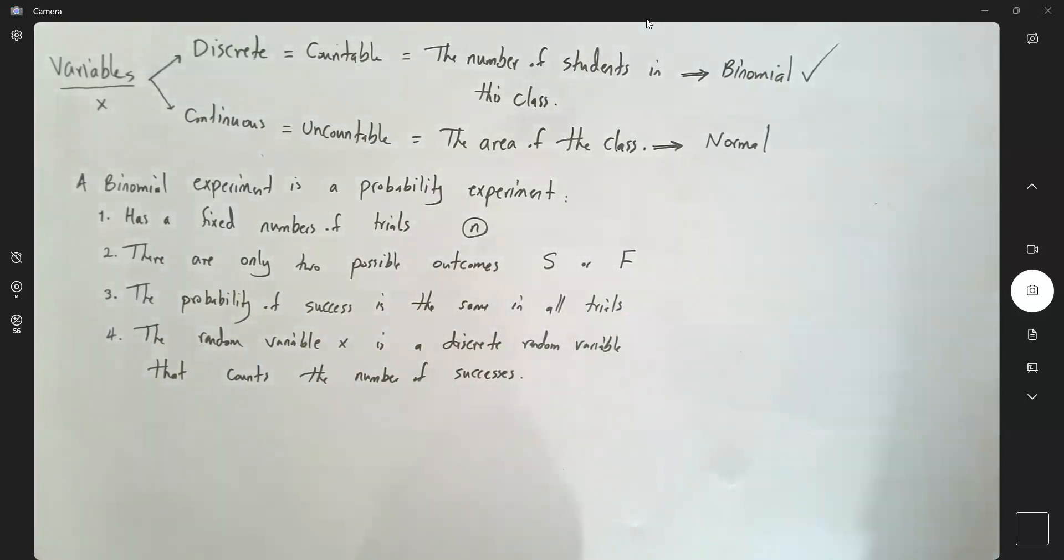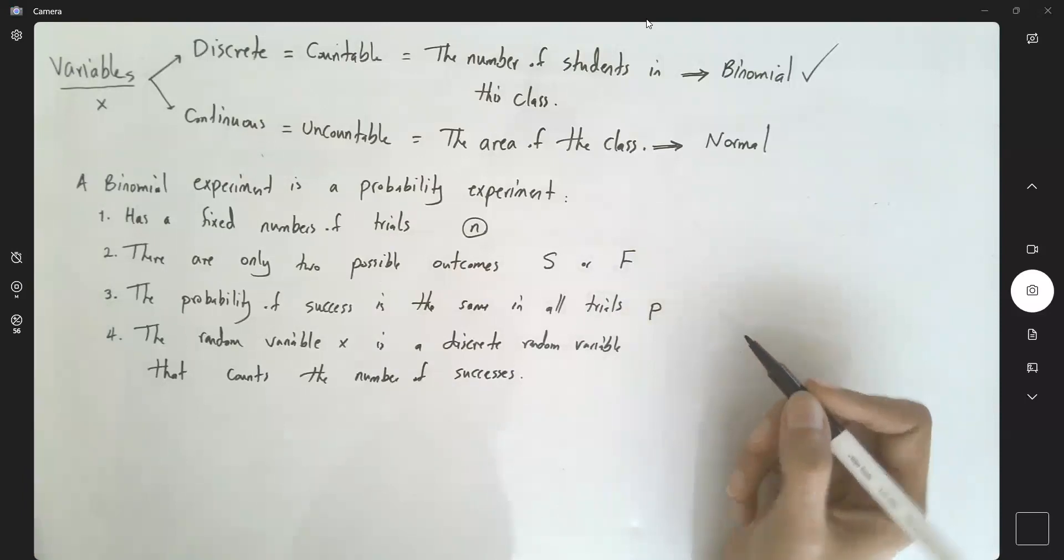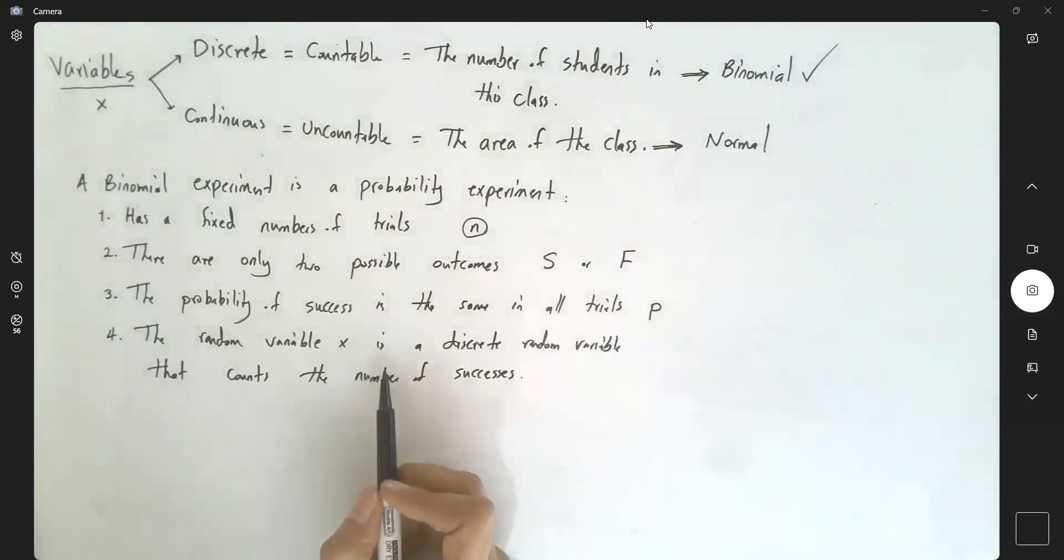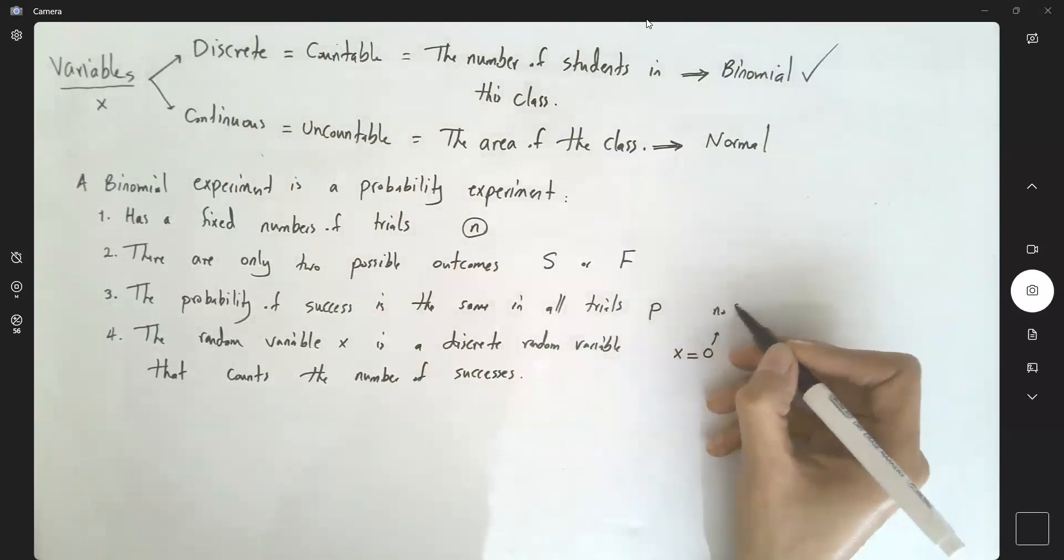So the probability of success is denoted by p, and q is the probability of failure, which is 1 minus p. When you say that x counts the number of successes, x can be 0, which means that you have no success at all.